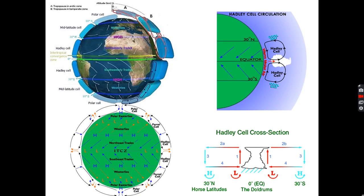Firstly, let's consider the global atmospheric circulation. As you will know, the atmosphere organises into large-scale patterns with circulation cells such as the Hadley cell, and also the mid-latitude cells and the polar cells. At the equator we have the intertropical convergence zone, which is where we have strong solar heating and that leads to an unstable atmosphere and lots of convection.